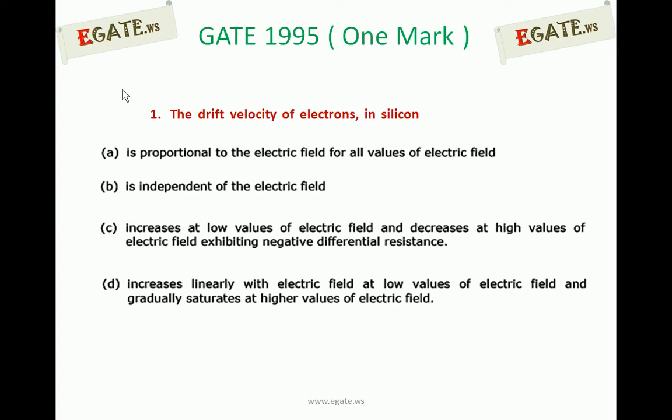The question is about the Drift Velocity of Electrons in Silicon. Option A: is proportional to electric field for all values of electric field. Option B: is independent of electric field. Option C: increases at low values of electric field and decreases at high values, exhibiting negative differential resistance. Option D: increases linearly with electric field at low values and gradually saturates at higher values of electric field.